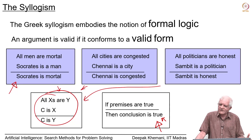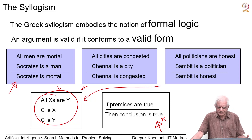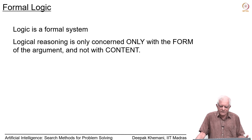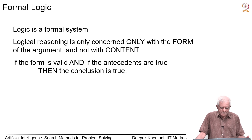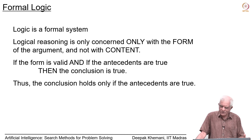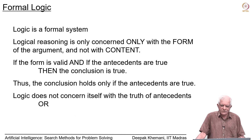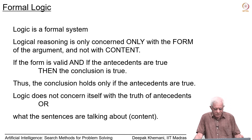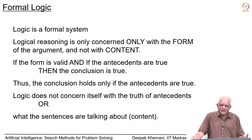Logic is a formal system concerned only with the form of the argument, not the content. If the form is valid and the antecedents are true, then the conclusion is always true. Logic does not concern itself with the truth of the antecedents, nor with the meaning of the sentences — only with valid forms of argument.